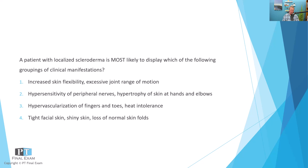A patient with localized scleroderma is most likely to display which of the following groupings of clinical manifestations? One: increased skin flexibility, excessive joint range of motion. Two: hypersensitivity of peripheral nerves, hypertrophy of skin at hands and elbows. Three: hypervascularization of fingers and toes, heat intolerance. And four: tight facial skin, shiny skin, loss of normal skin folds.